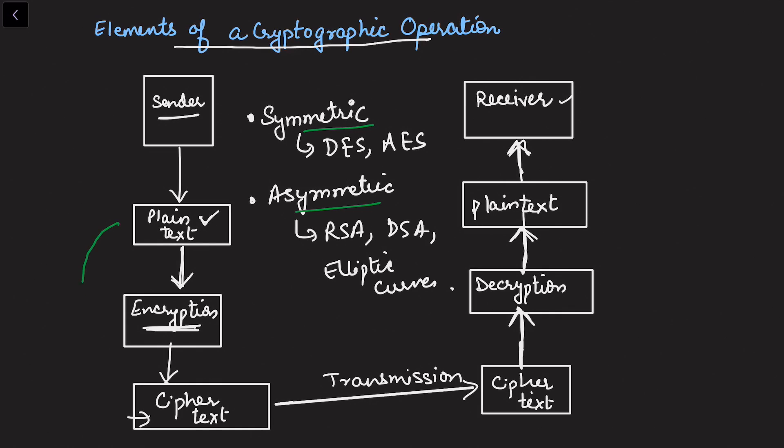Before we go into these algorithms of symmetric and asymmetric, let's look at some of the techniques that transform plaintext into ciphertext. We'll talk about substitution techniques and transposition techniques. In my next video, we'll be first talking about these so that helps us to understand how plaintext is transferred into ciphertext.